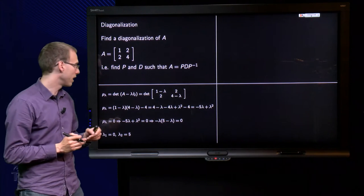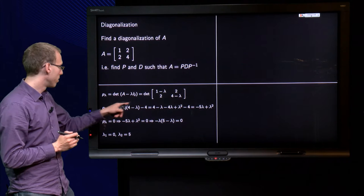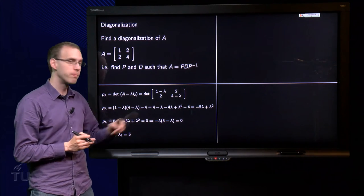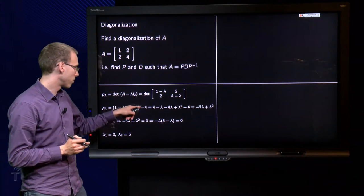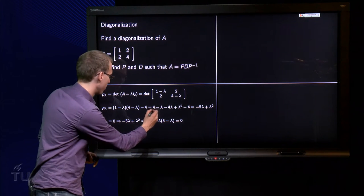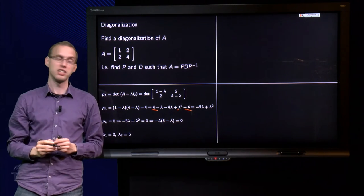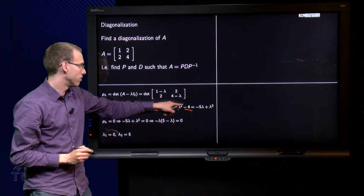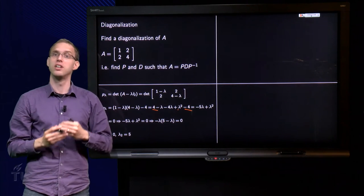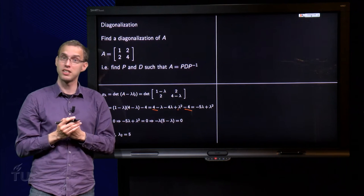We work out the brackets, we get 4 minus lambda minus 4 lambda, plus lambda squared minus 4, and you will see that plus 4 and minus 4 are nicely cancelling out. We have minus 5 lambda plus lambda squared, so there we have the characteristic polynomial.